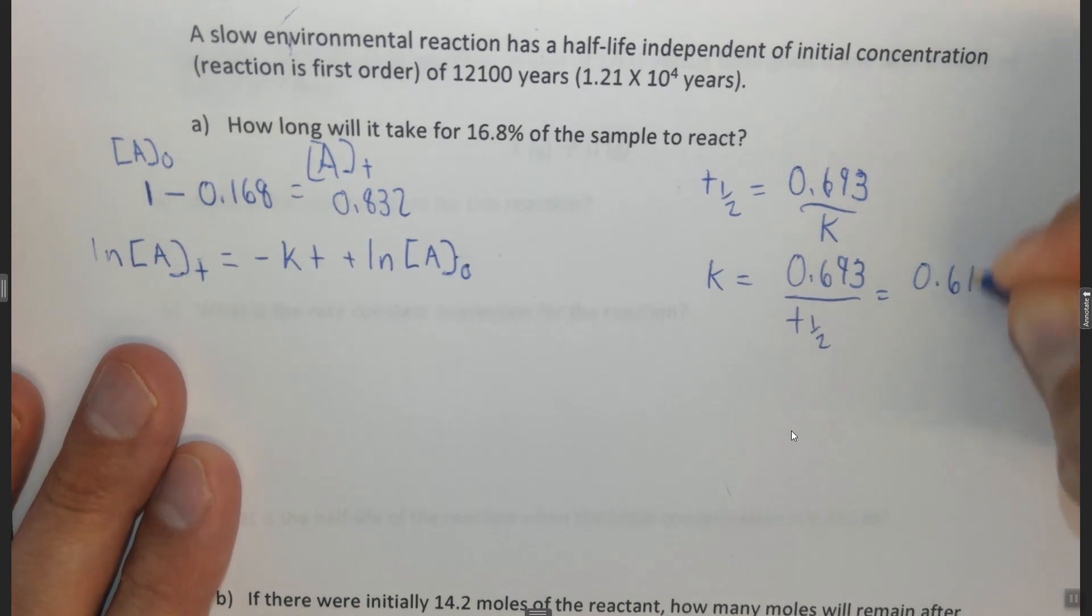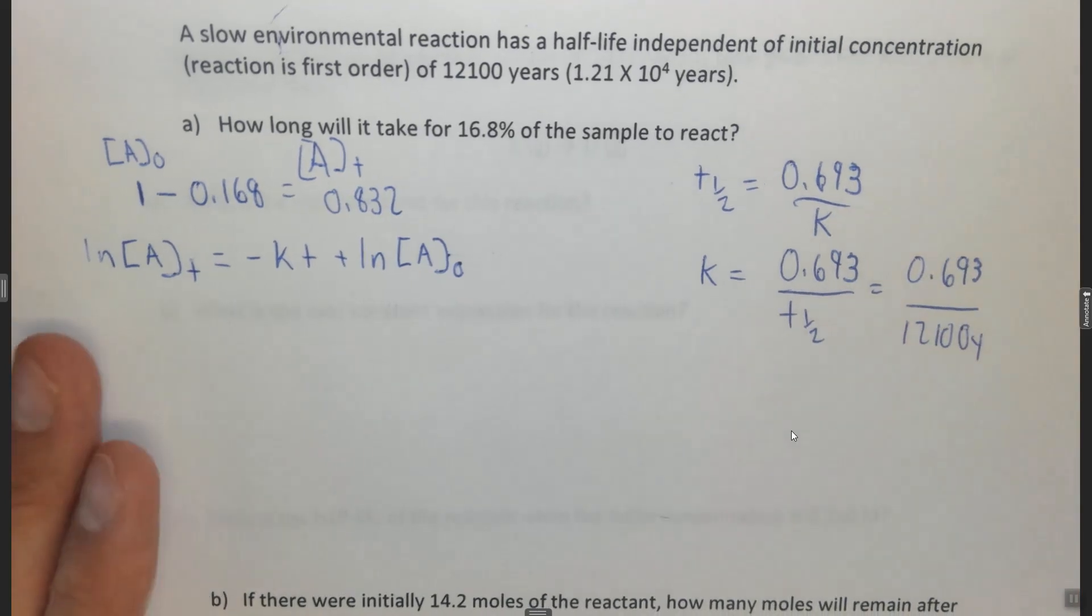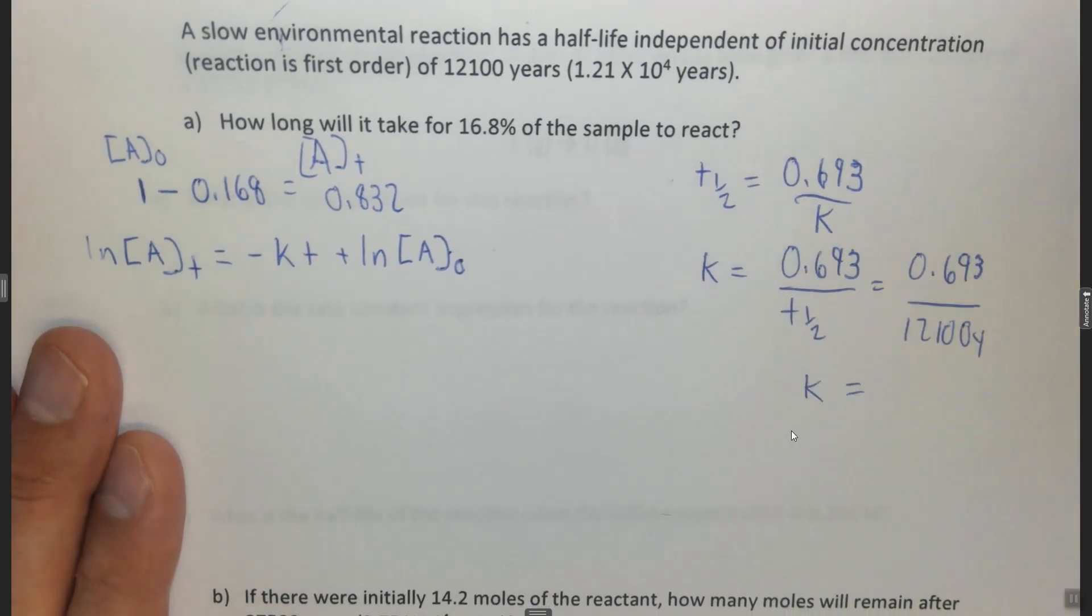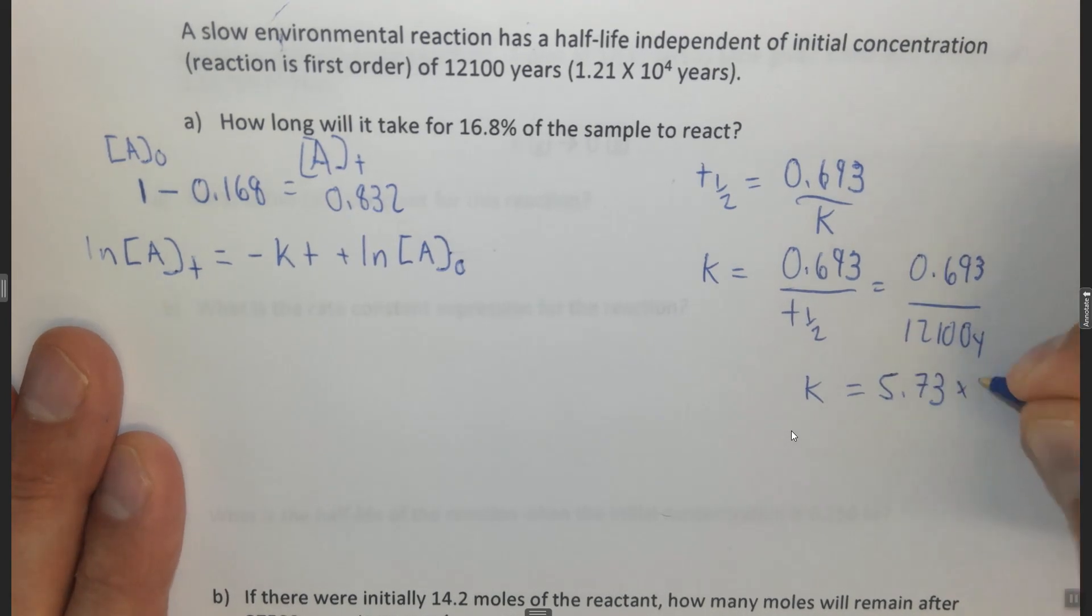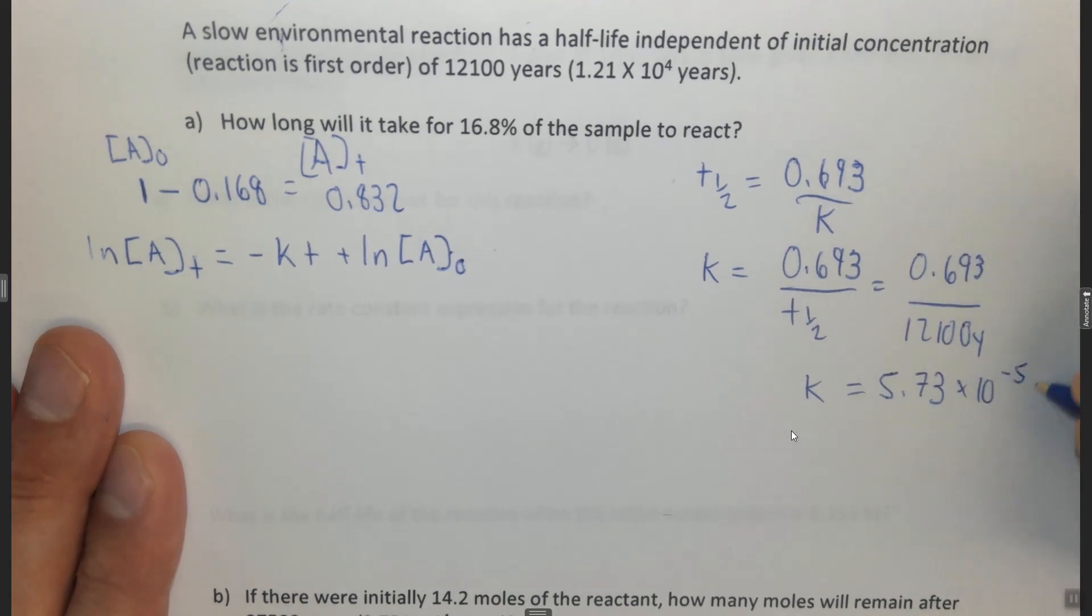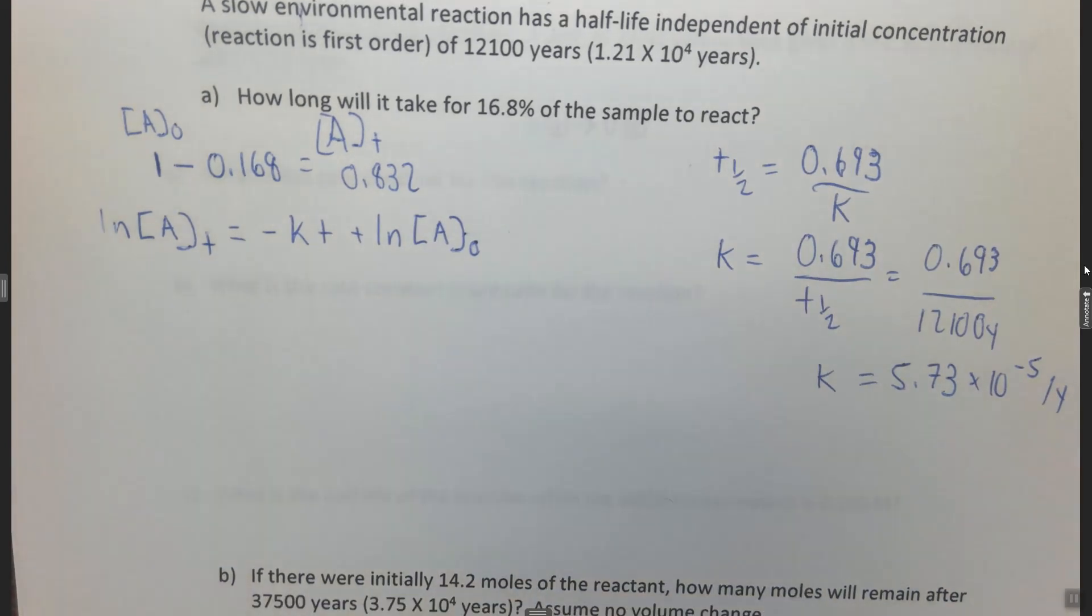It's 0.693 divided by our 12,100 years. So we know that K is equal to 5.73 times 10 to the minus 5 per year. We can find K from the half-life equation.